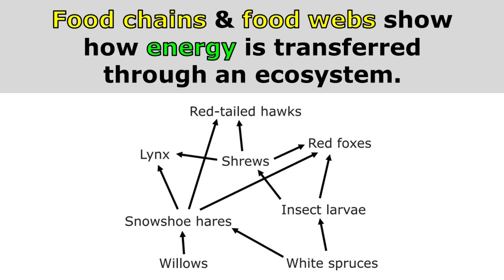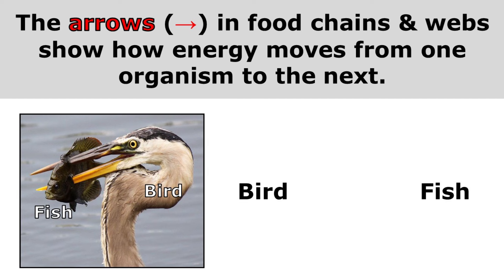Food chains and food webs show how energy is transferred through an ecosystem. The arrows in food chains and webs show how energy moves from one organism to the next.